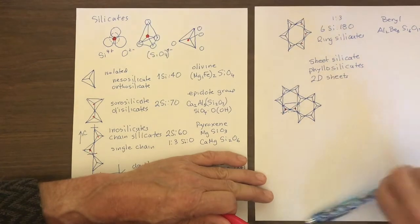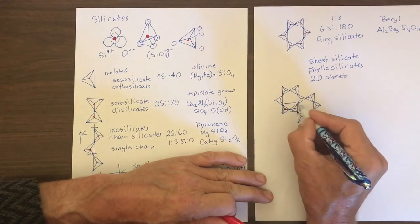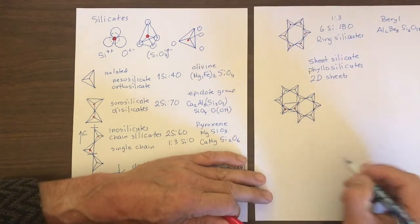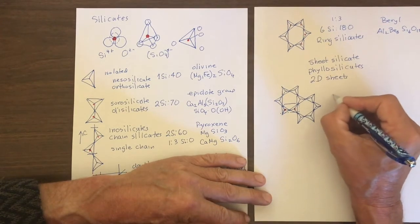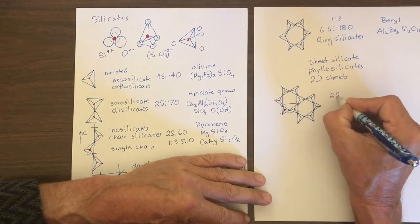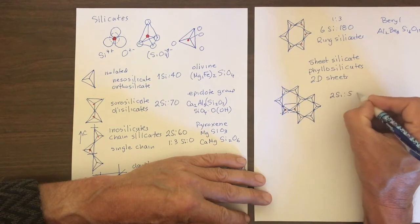And it has one, two, three, four, five oxygens. So in these, the stoichiometry is two silicas to five oxygens.